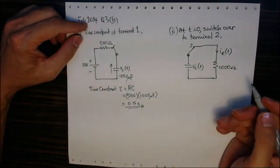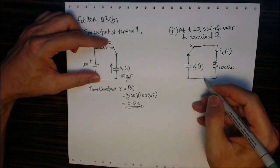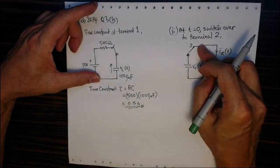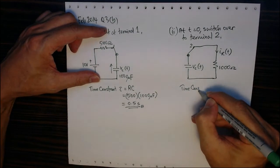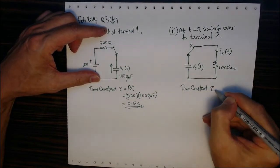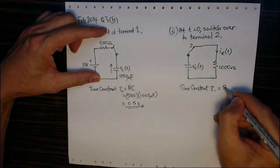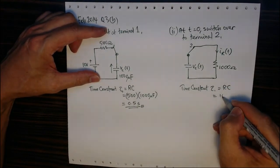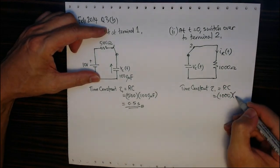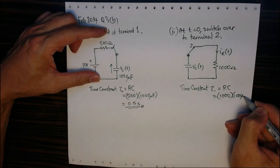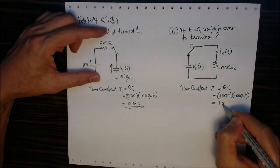Similarly, for the circuit when it switches over to terminal 2, the new τ is RC again, which equals 1000 ohms multiplied by 1000 microfarads. That gives a time constant of 1 second.